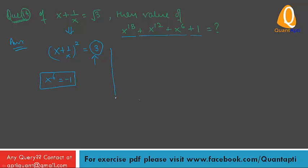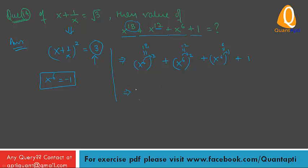Now break the powers: x raised to power 18 equals x raised to power 6 to the power 3, which equals minus 1 to the power 3. x raised to power 12 equals x raised to power 6 to the power 2, giving minus 1 to the power 2. x raised to power 6 equals minus 1 to the power 1. Plus 1 as the constant term.